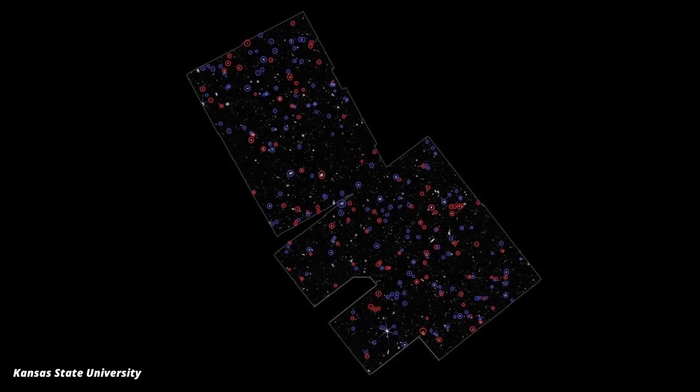Those are marked in blue. And only a third rotate in the same direction as the Milky Way. Those are marked in red. That's wild. It really shouldn't happen. Even Albert is shocked.